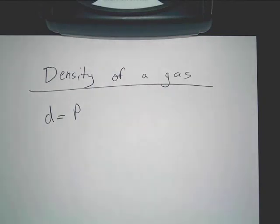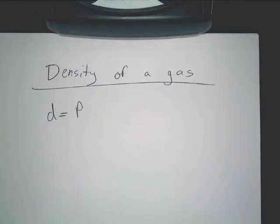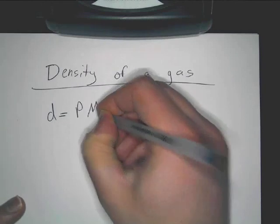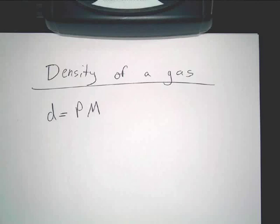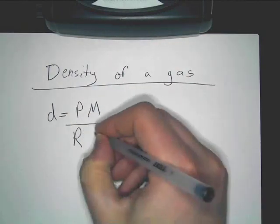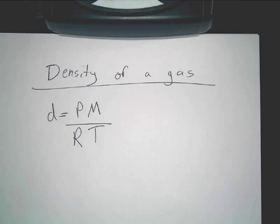Write this formula down. D stands for density, P stands for pressure, capital M I'll tell you that in a minute, R constant, T Kelvin temperature.